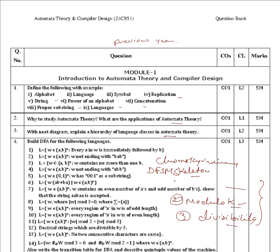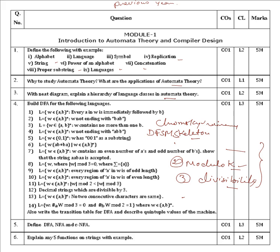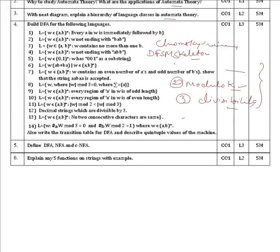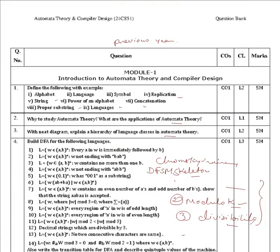These are the possible questions chosen from previous year question banks. For the theory part, worth five marks: write the differences between DFA, NFA, and epsilon-NFA. Also, explain five functions on strings with examples — such as string concatenation, string slicing, and string appending.